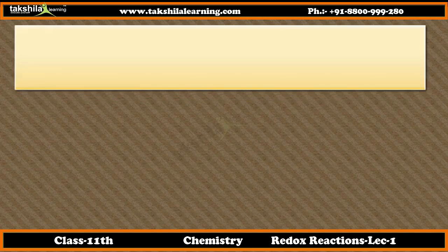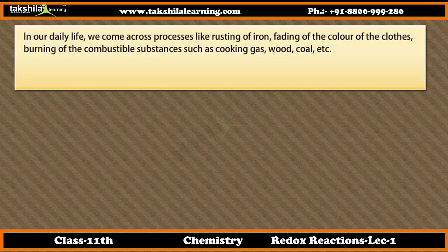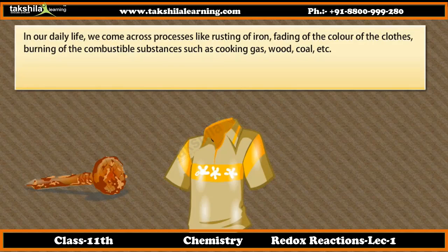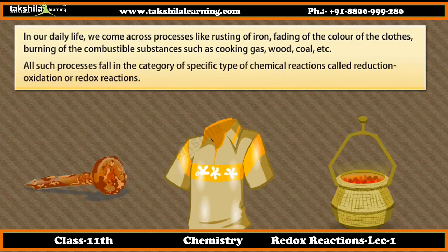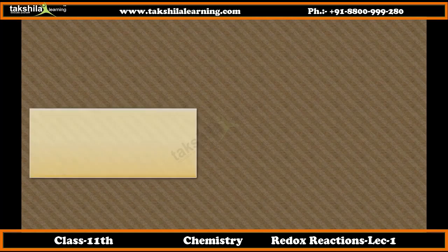In our daily life, we come across processes like rusting of iron, fading of the color of clothes, burning of combustible substances such as cooking gas, wood, coal, etc. All such processes fall in the category of a specific type of chemical reactions called reduction-oxidation, or redox reactions.